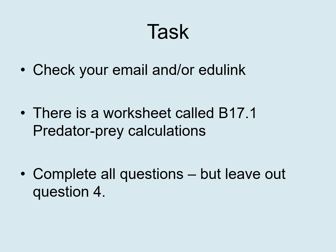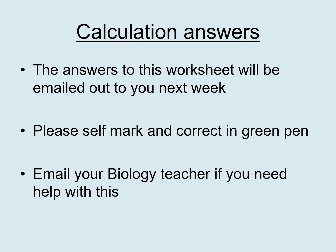Check your email and Edulink — the worksheet you're looking for is B17.1 Predator-Prey Calculations. Complete all the questions on that sheet but leave out question four. You don't have to print it — you can type directly onto it or write answers on a separate piece of paper. The answers will be emailed out and uploaded to Edulink next week, and you'll need to self-mark and correct in green pen.